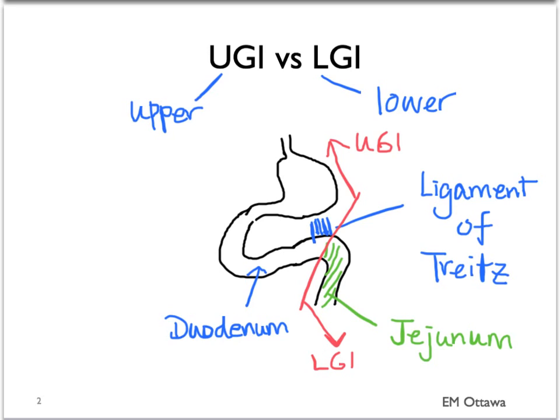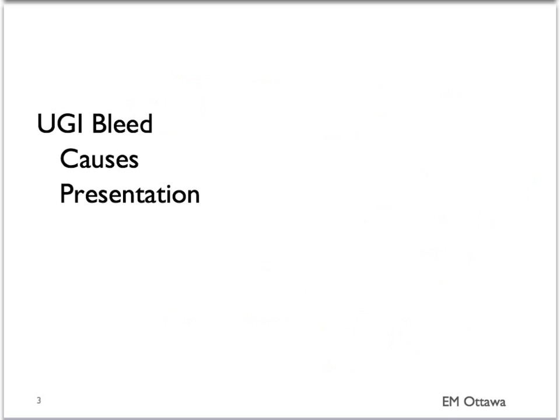In this segment, we will focus on the causes and presentation of upper GI bleed. We will discuss each cause and how they might present.